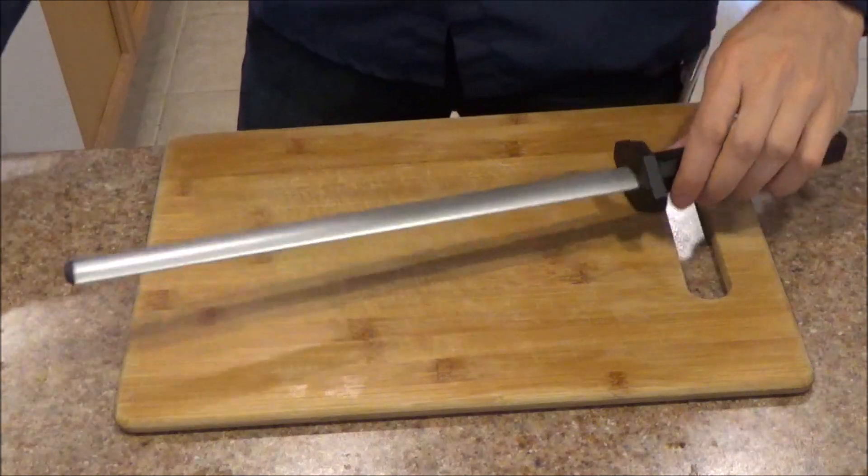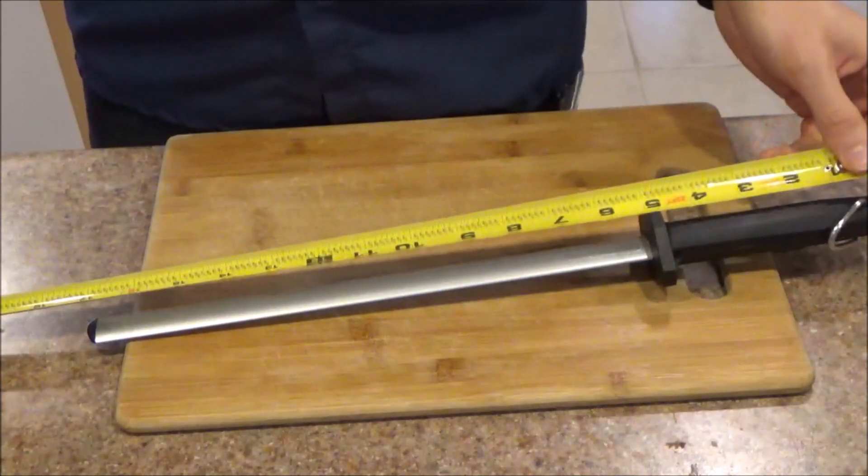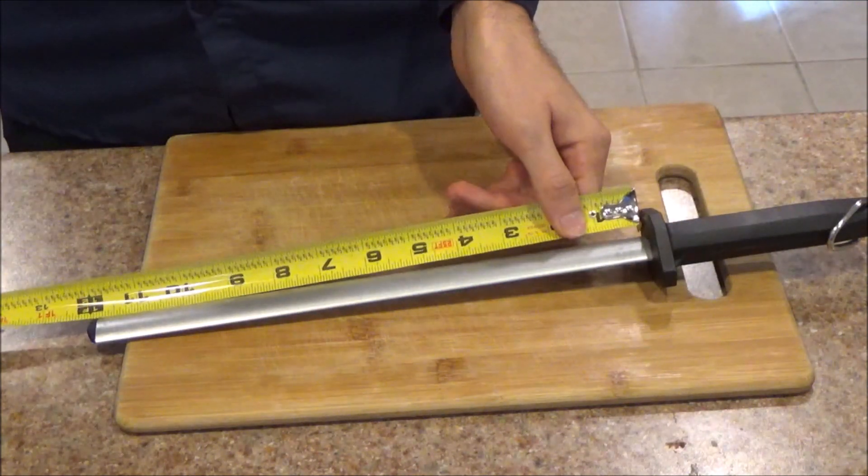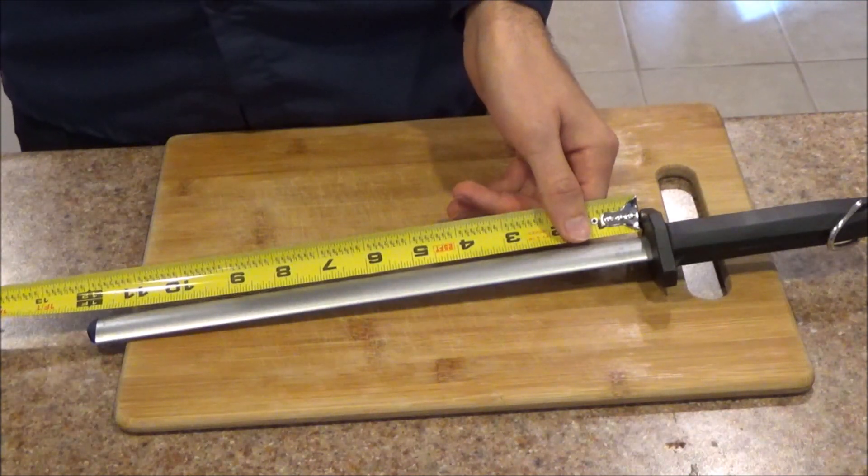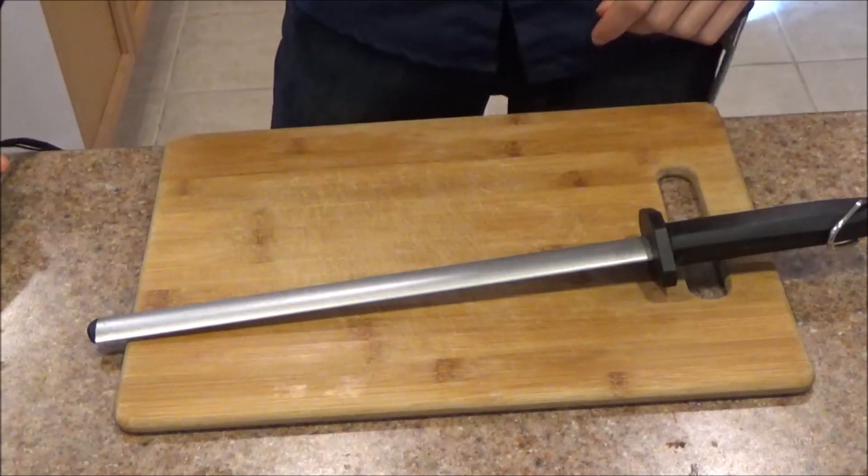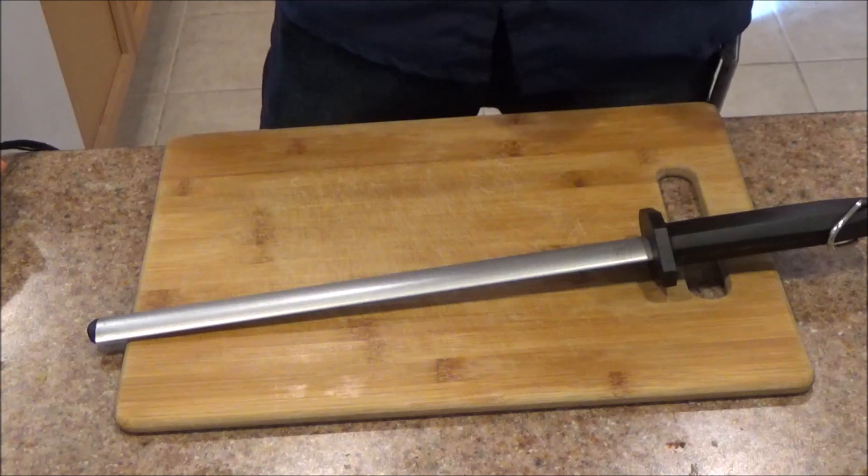The overall length comes in at 17 inches. The length of the honing surface comes in at 11 and 15 sixteenths of an inch, almost 12 inches. That means that the steel is usable for knives up to 10 inches in length.